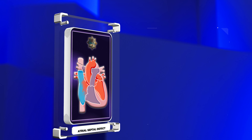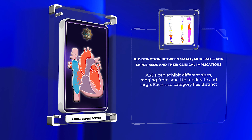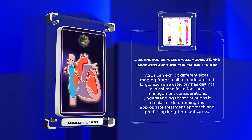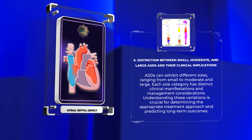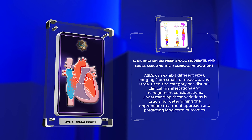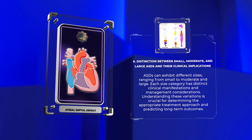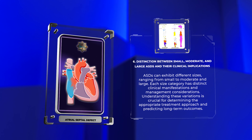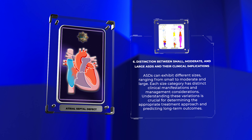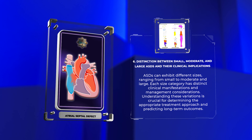ASDs can exhibit different sizes, ranging from small to moderate and large. Each size category has distinct clinical manifestations and management considerations. Understanding these variations is crucial for determining the appropriate treatment approach and predicting long-term outcomes.